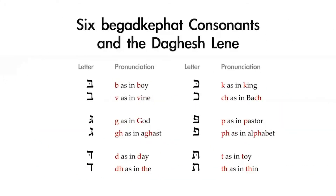Six of the letters in Hebrew have two possible pronunciations — a hard pronunciation and a soft pronunciation. These are the six begad kafat consonants. The word begad kafat is a mnemonic device — a made-up word that helps you memorize which letters are the begad kafat letters. If you say begad kafat, you'll recognize the consonants B, G, D, K, P, T, which relate to the Bet, Gimel, Dalet, Kaf, Pe, and Tau in Hebrew. So if you can say begad kafat, you'll know which letters are the begad kafat letters.